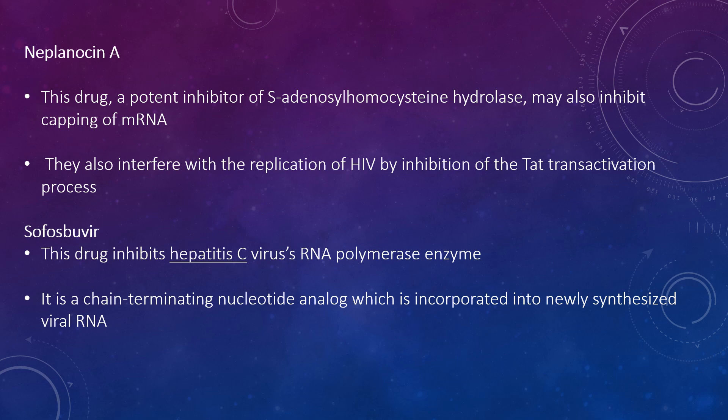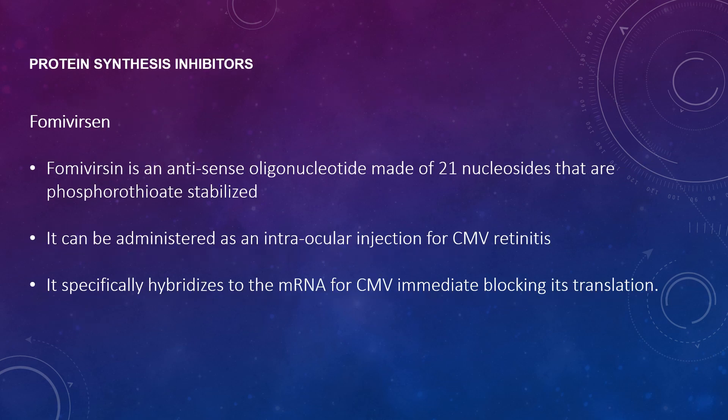Sofosbuvir inhibits the hepatitis C virus RNA polymerase enzyme and is a chain-terminating nucleotide analogue which is incorporated into newly synthesised viral RNA. Fomivirsen is an antisense oligonucleotide made of 21 nucleosides that are phosphorothioate-stabilised. It can be administered by intraocular injection for CMV retinitis. It specifically hybridises to the mRNA of CMV immediate early genes, blocking their translation.